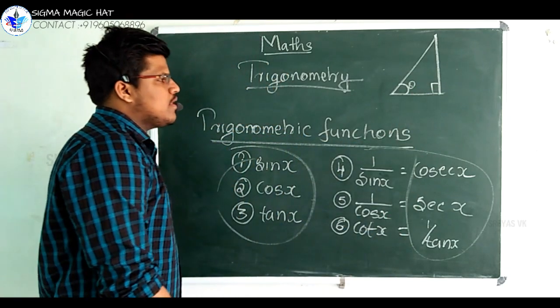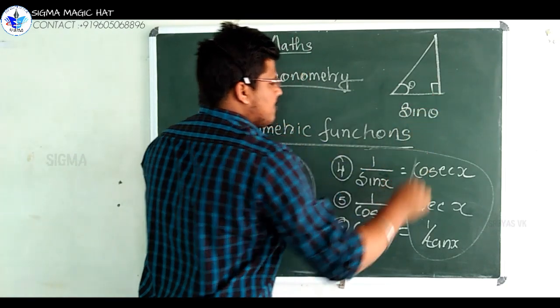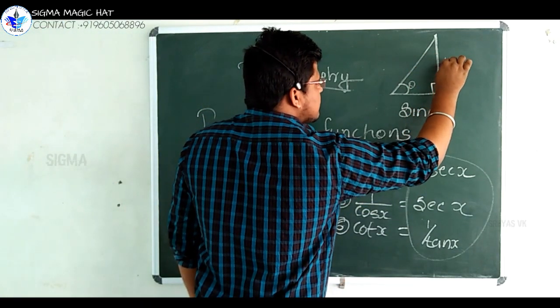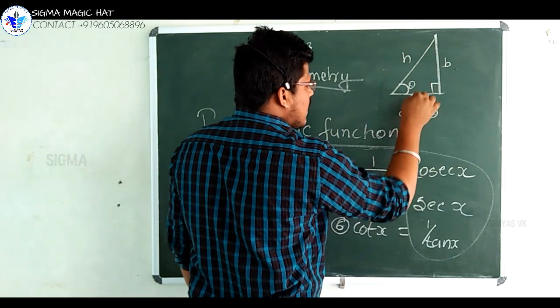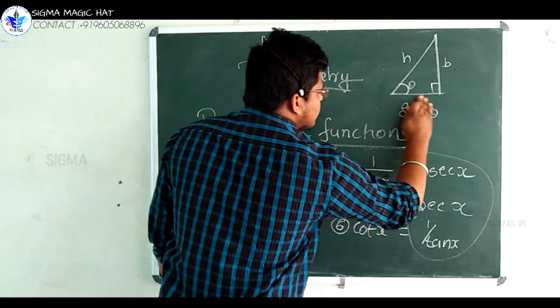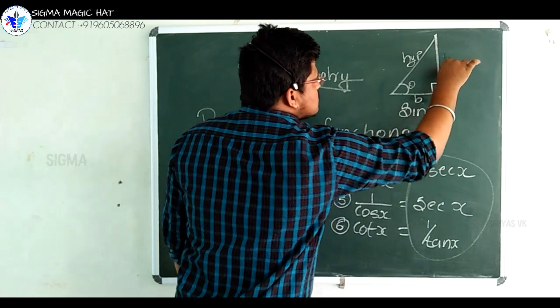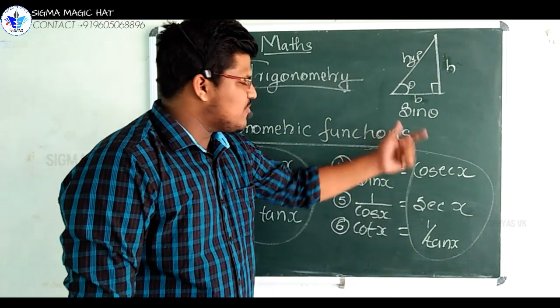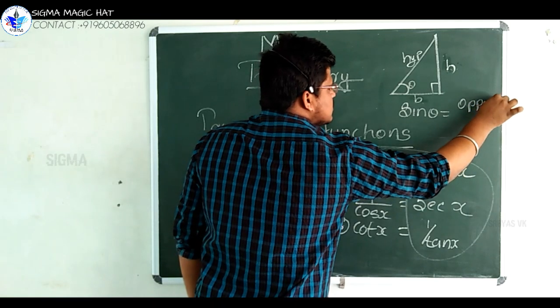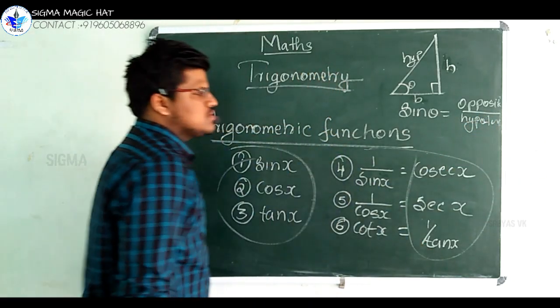In this right angle, we can find sin theta. Consider this side as B and this as the height H, and this as the base. Or we can change it as base B and height H. This is hypotenuse. So, the definition of sin theta is opposite side by hypotenuse, which is equal to H by hypotenuse.